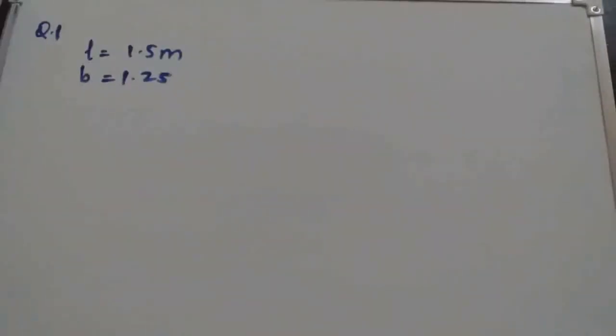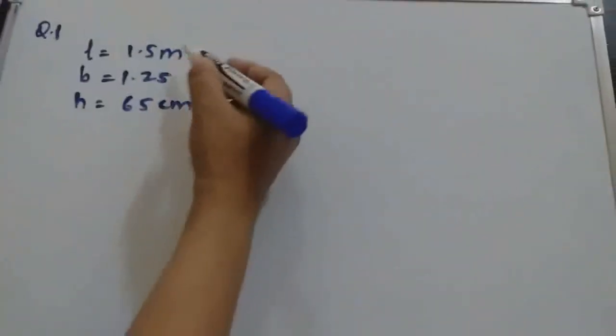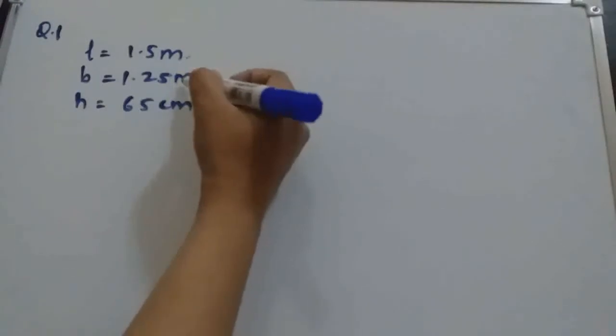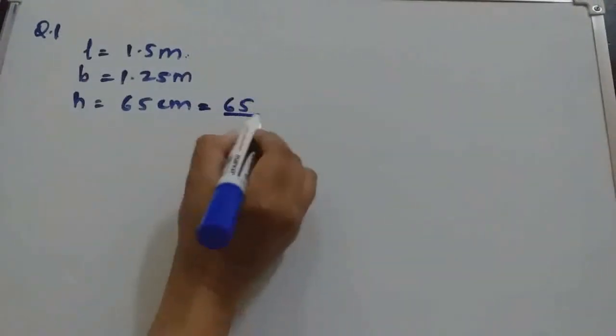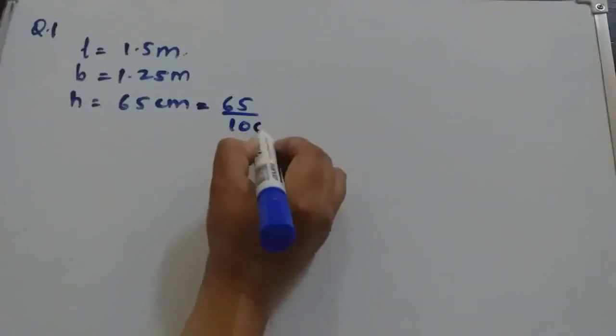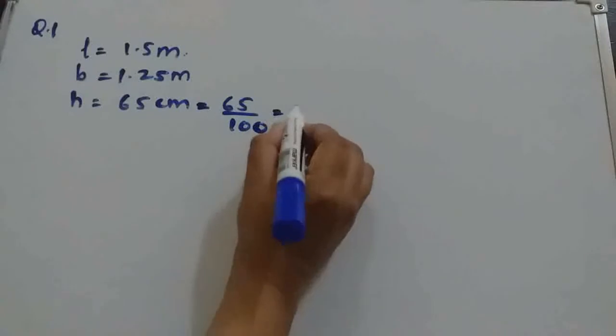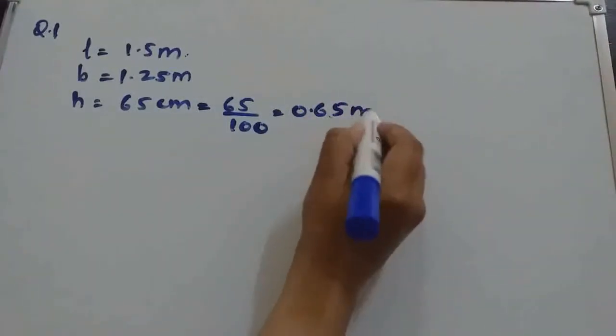65 centimeters deep means height is 65 centimeters. Now if you observe, these two are given in meters and this one is in centimeters, so we will convert these to meters. 1 centimeter is 1 by 100 meters, so we divide by 100 to get the answer in meters: 0.65 meters.